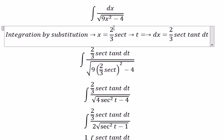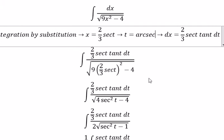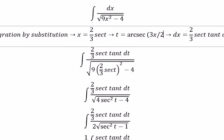We divide both sides by 2 over 3 and we get t equals arcsec of 3x over 2.